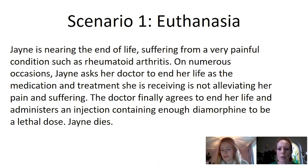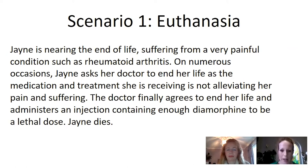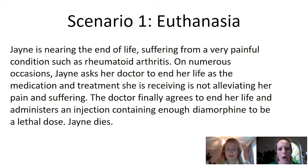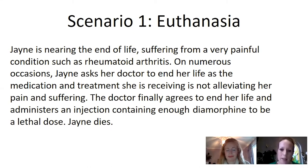This first scenario involving Jane is one which relates to euthanasia. Here we have a patient, Jane, who's repeatedly asked her doctor to end her life — so this is a case of voluntary euthanasia. Whilst the scenario doesn't explicitly say that Jane is terminally ill, she's not receiving relief from her pain and suffering through the treatment she's getting. What is done here to end Jane's life, which is the lethal dosage of diamorphine, is done by the doctor. Jane plays no part in the act which causes her death, and this is what makes this an instance of euthanasia rather than assisted suicide.